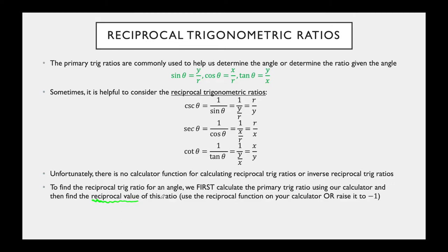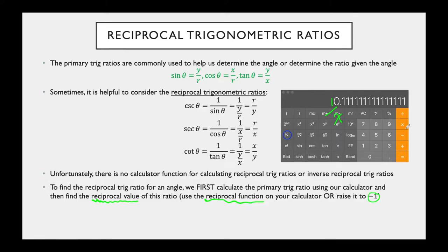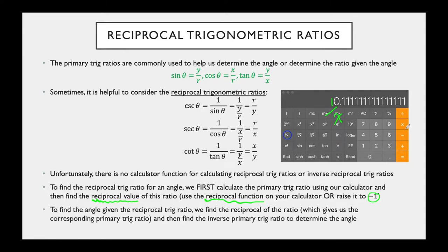To find the reciprocal of a trig ratio for an angle, first calculate the primary trig ratio using your calculator, then take the reciprocal — either raise it to the power of −1 or use the 1/x button. If you're given the ratio and want to find the angle, flip the numerator and denominator first, then use the inverse primary trig ratio.